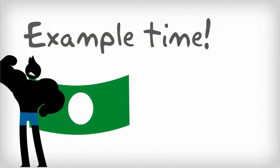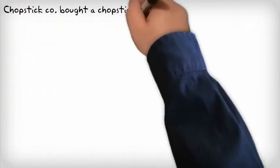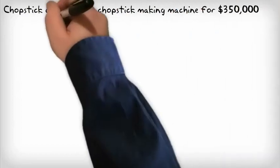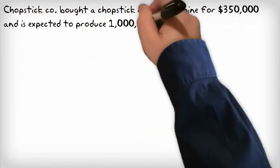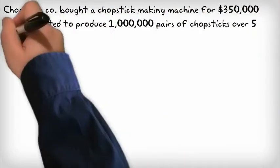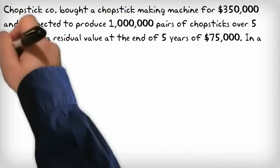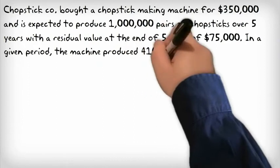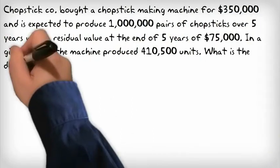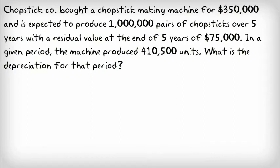Example time. Chopstick company bought a chopstick making machine for $350,000 and is expected to produce 1 million pairs of chopsticks over a period of 5 years, with a residual value at the end of 5 years of $75,000. In a given period, the machine produced 410,500 units.